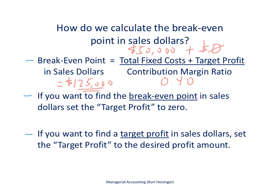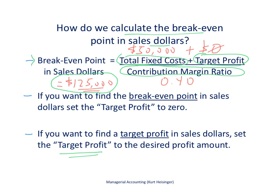Now we have all the information to calculate the breakeven point in sales dollars. The breakeven point in sales dollars equals total fixed costs plus target profit — set to zero at breakeven — divided by the contribution margin ratio of 40%, or 0.40. Running the numbers: $50,000 divided by 0.40 gives a breakeven point of $125,000 in sales. That means the company must generate $125,000 in monthly revenue to achieve zero profit. To find a target profit in sales dollars, simply set the target profit variable to the desired amount and calculate.